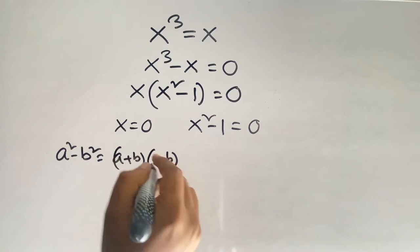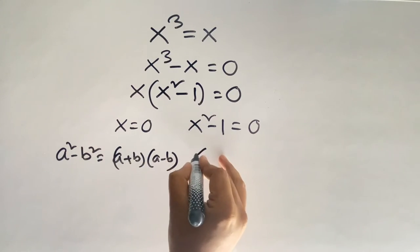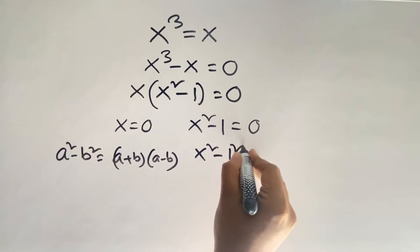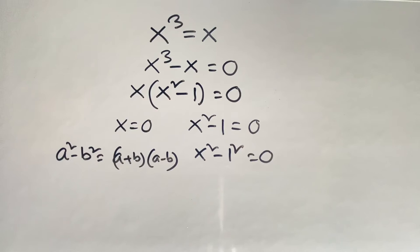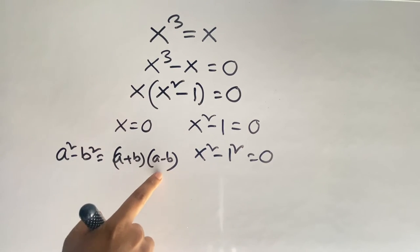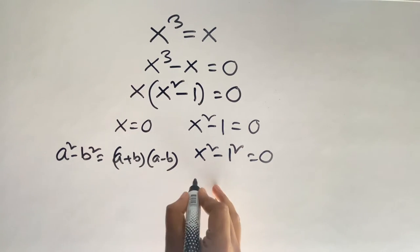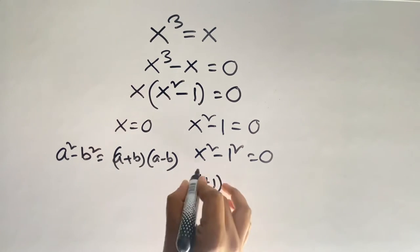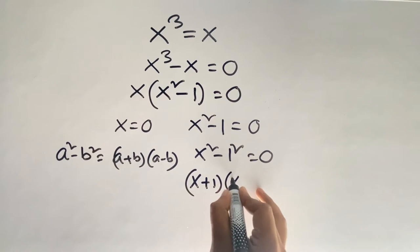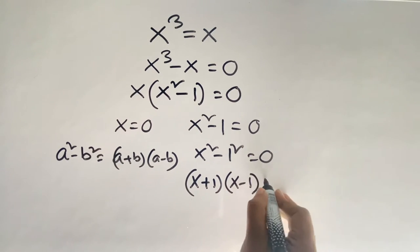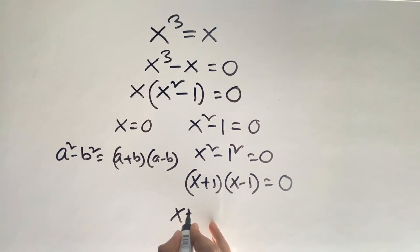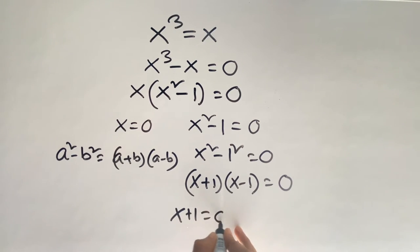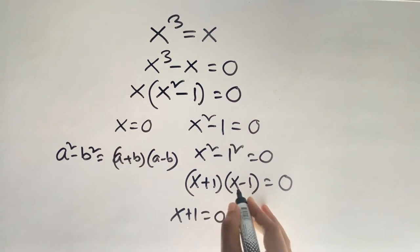If I follow this rule, I can say x squared minus one squared equals zero. We know that as (a plus b)(a minus b), so here we get (x plus one)(x minus one) equals zero. Now I can say x plus one equals zero is one case, and the other case is x minus one equals zero.